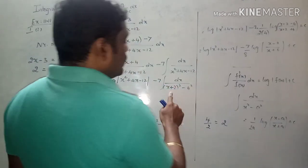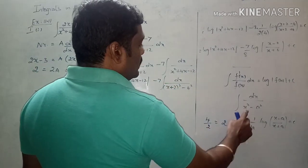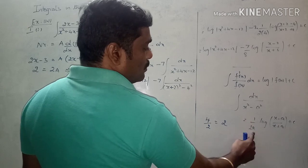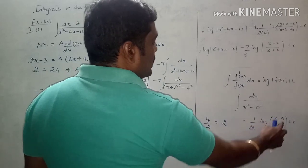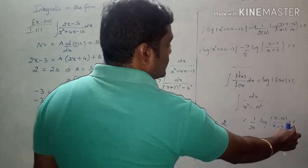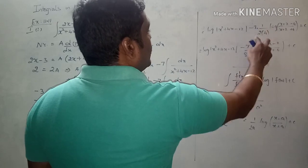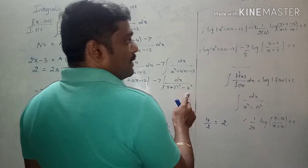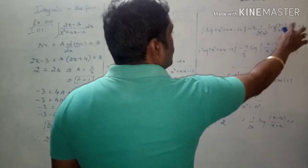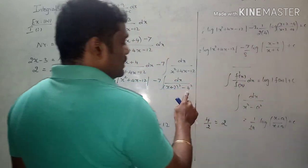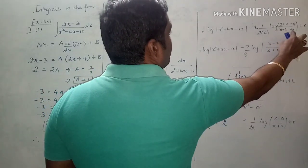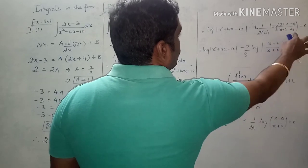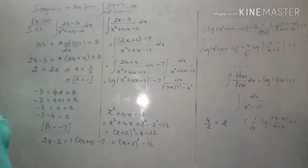This is again of the form integral of dx/(x² minus a²), with formula (1/2a) log|(x minus a)/(x plus a)| + C. Here a = 4 and x is replaced by (x + 2). So: x + 2 minus 4 = minus 2, and x + 2 plus 4 = plus 6. The final answer is log(x² + 4x minus 12) minus (7/8) log|(x minus 2)/(x + 6)| + C. Thank you.